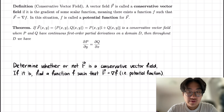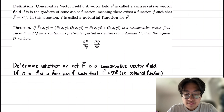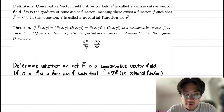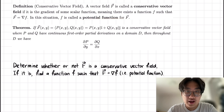The definition of a conservative vector field is as follows. A vector field F is called a conservative vector field if it is the gradient of some scalar, meaning there exists a function f such that the vector field F is equal to del f, or the gradient of f. In this situation, f is called a potential function for the vector field F.